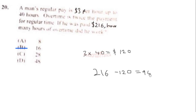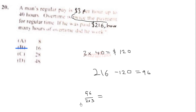We divide the overtime earnings by the overtime rate, which is double the regular rate: 2 times 3 equals 6 dollars per hour. So the number of overtime hours equals 96 divided by 6, which equals 16. The answer is 16 hours of overtime. Don't forget to click the subscribe button — thank you for watching.